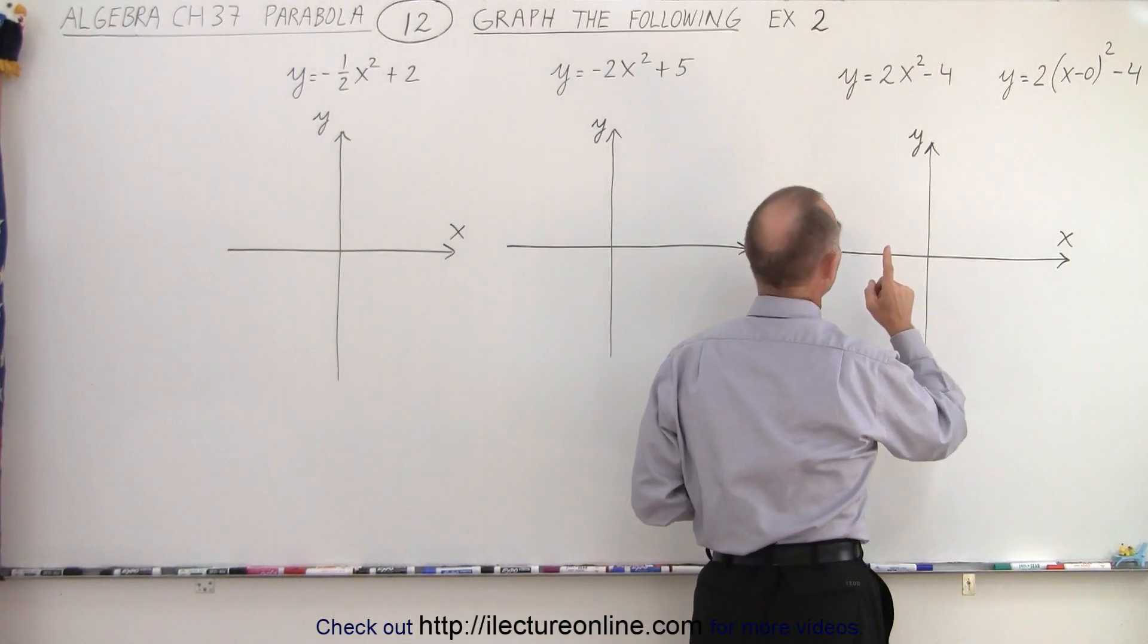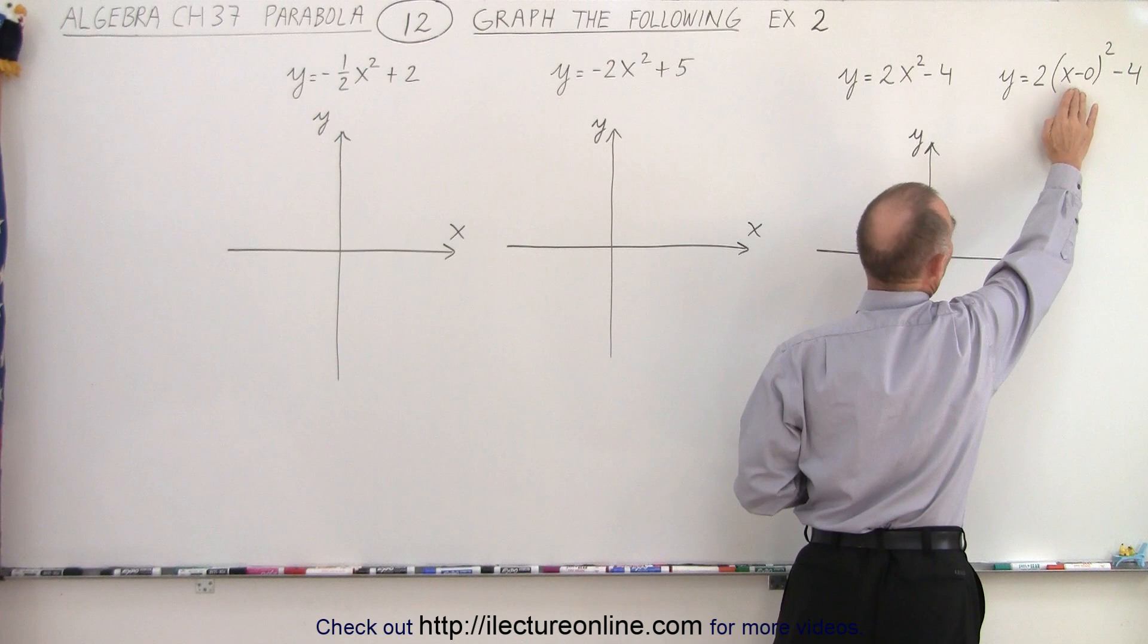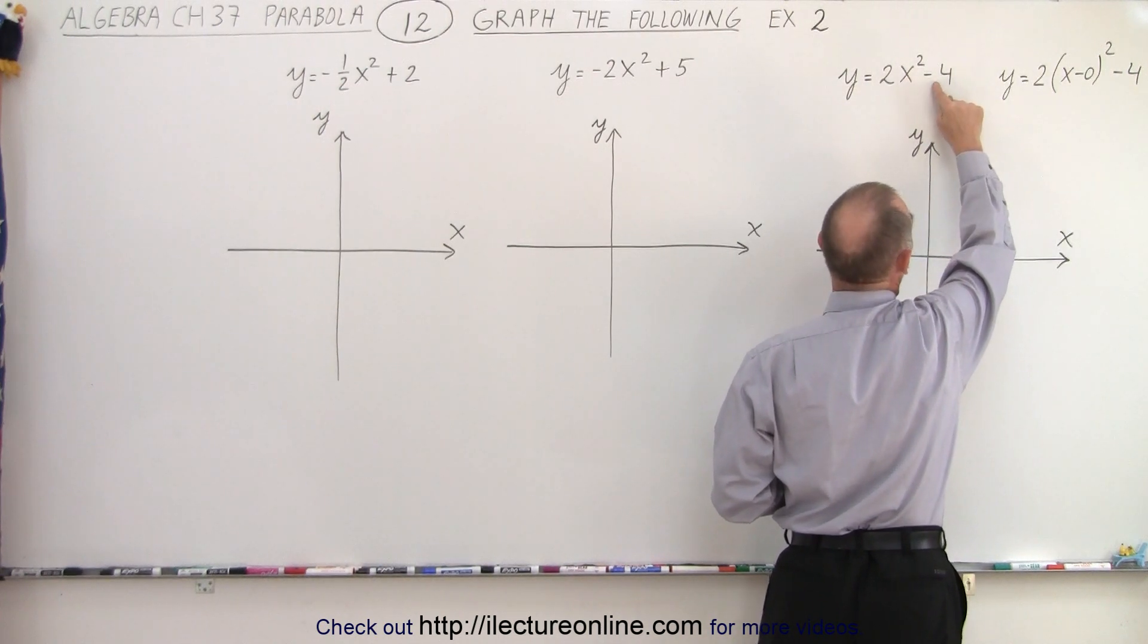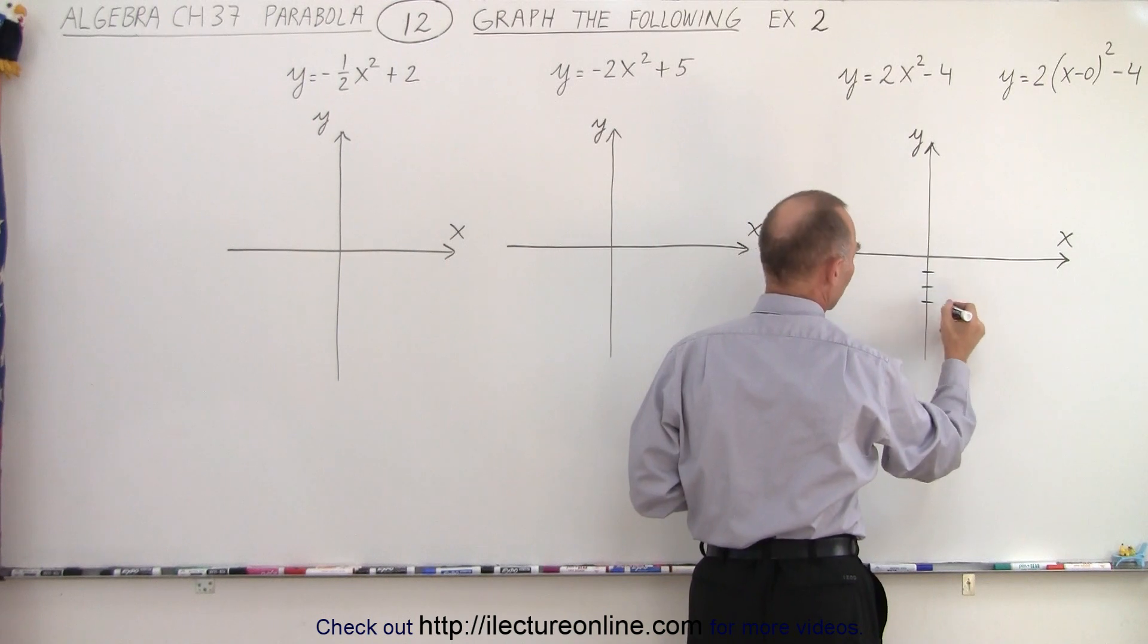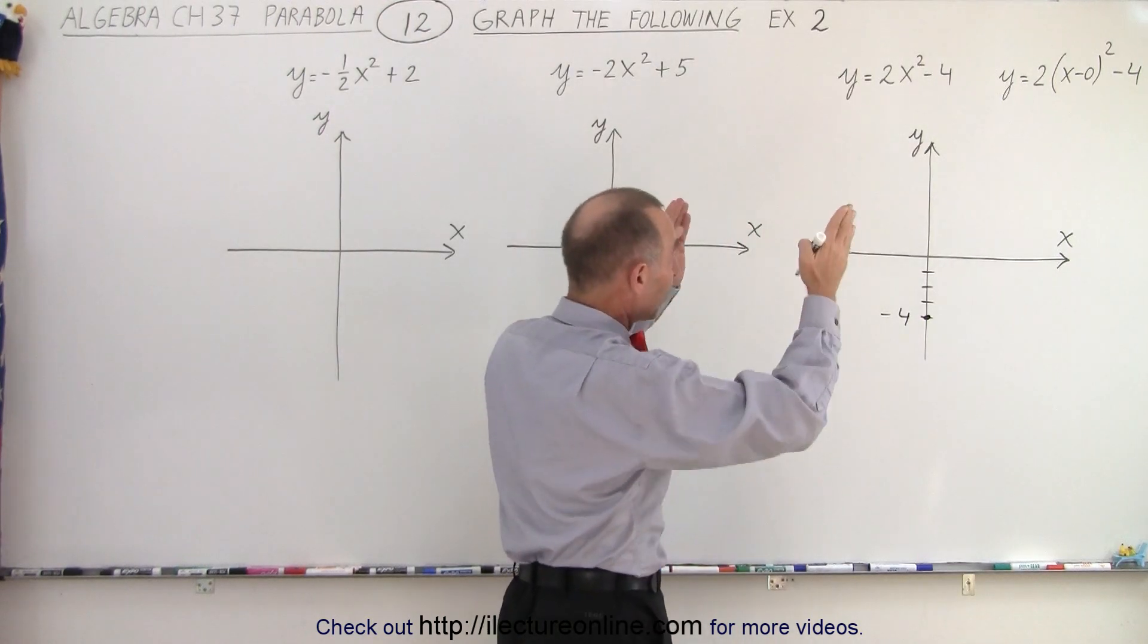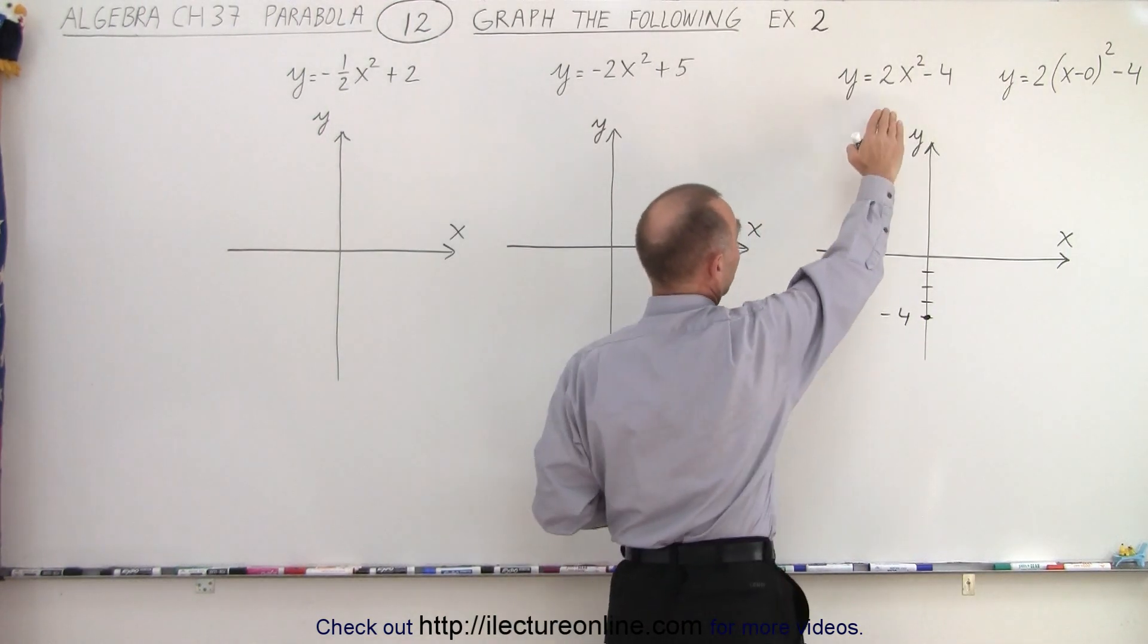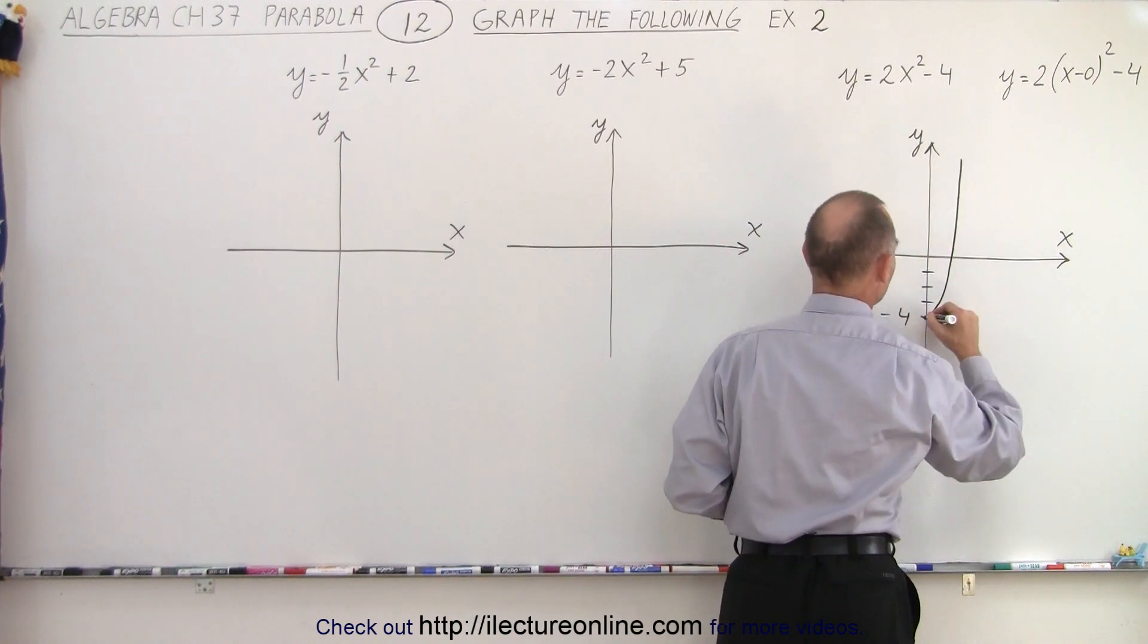So where will the vertex be? It will be on the y-axis because there's no shift to the left or to the right. It will be 4 units below the origin. So it would be 1, 2, 3, 4, minus 4. So we know the vertex is there. Then we know that the parabola will open upward. It will be skinny because it grows twice as fast as normal. So the parabola will look kind of like this.